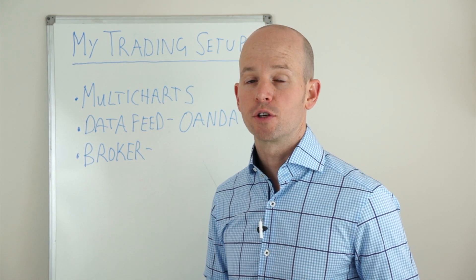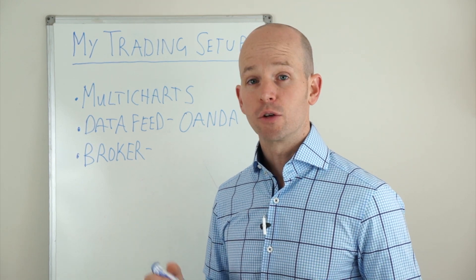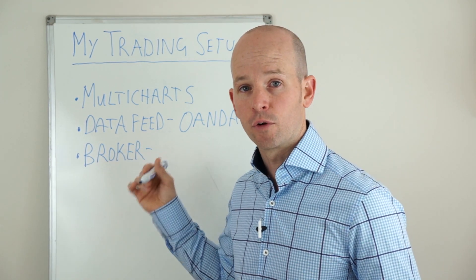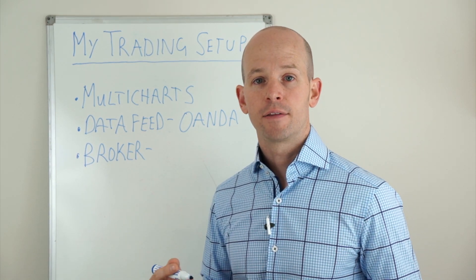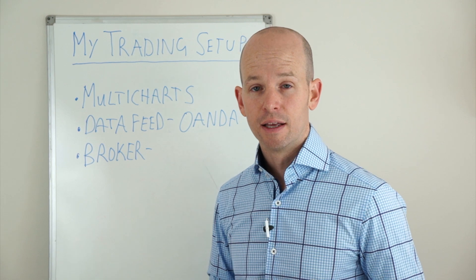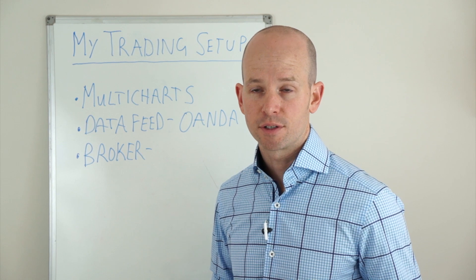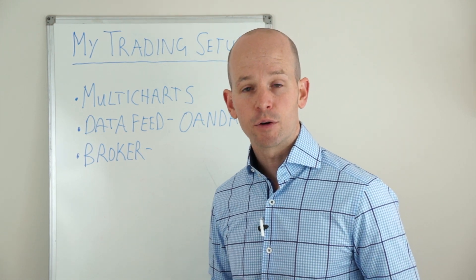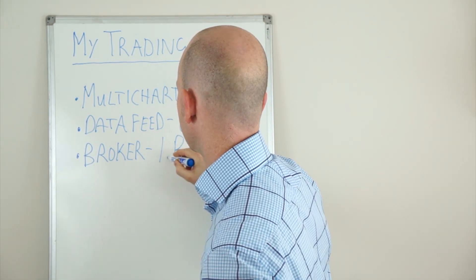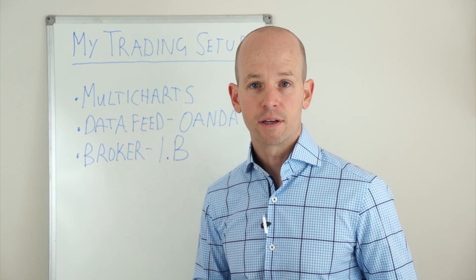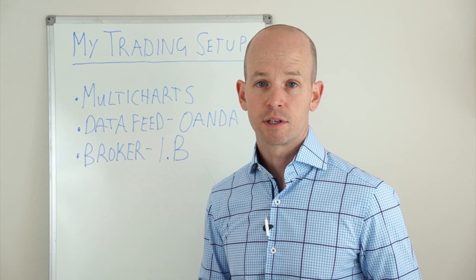There are lots of broker choices you can use to trade via Multicharts. For me personally, I used to use Oanda for the data feed and to trade through as my broker. But at the end of 2017 they actually stopped allowing that for EU customers for some reason. So I made the switch and now I use Interactive Brokers, or IB. They're very good — I actually get better prices through Interactive Brokers than I did with Oanda, and you can trade a much wider range of instruments.